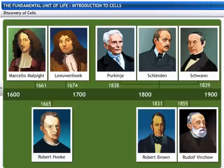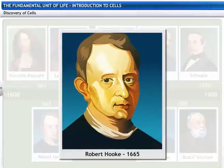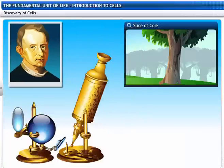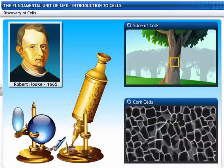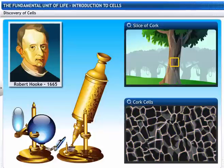In 1665, Robert Hooke, an English scientist, looked at a thin slice of cork through a compound microscope. He observed many tiny, hollow, room-like structures that resembled a honeycomb and called them cells. Hooke actually saw only the outer cell walls because cork cells are not alive.